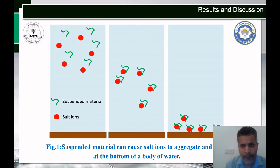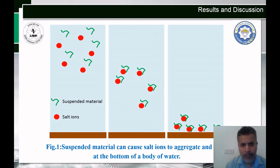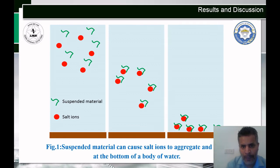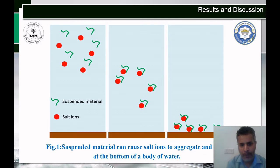The presence of suspended material causes salt-ion interactions and binding, leading to an increase in their weight and aggregation of the suspended material with the salt. This aggregation causes the particles to settle down, making the ocean clear, as mentioned before.